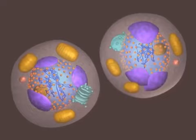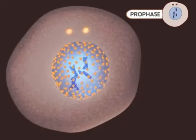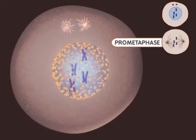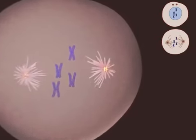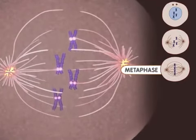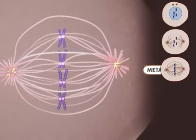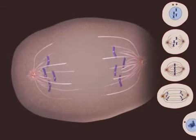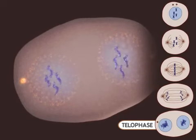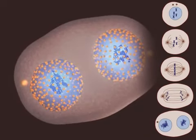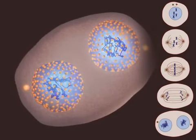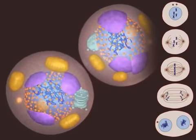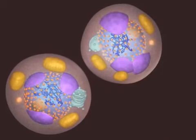Let's watch the process one more time. Mitosis begins with prophase — notice the DNA condensing into chromosomes during this stage. Microtubules appear during prometaphase and the nuclear membrane breaks down. Metaphase occurs when the chromosomes are aligned at the center of the cell. During anaphase, the chromosomes are moving apart. The telophase stage is marked by the appearance of new nuclear membranes. This is the end of mitosis. Finally, the splitting of the cell occurs during cytokinesis. The two new cells are now ready to grow and perform their specialized functions.